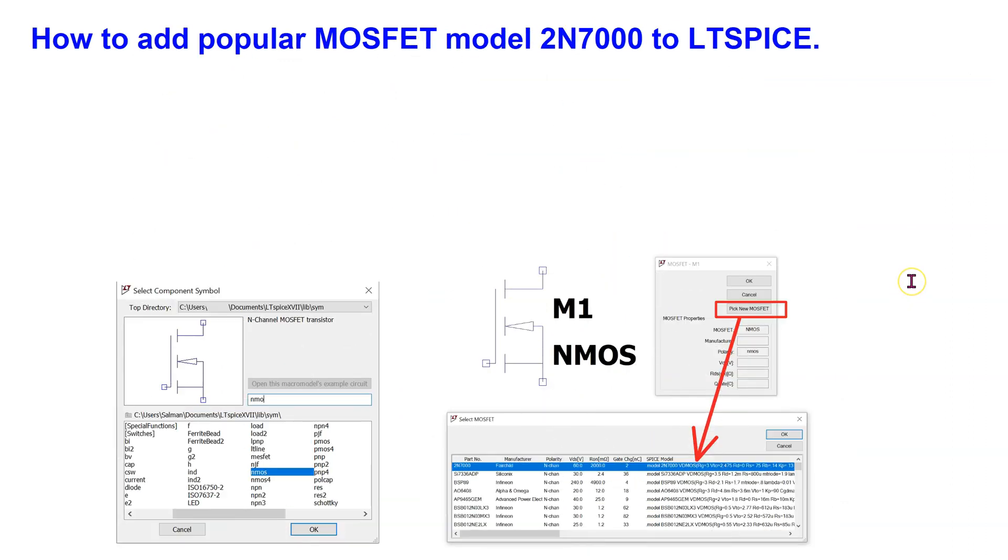LTSPICE also has a large library of MOSFET models. This can be accessed by placing the NMOS symbol onto the schematic and then right-clicking it to bring up this menu shown here. By clicking on pick new MOSFET, we can select a MOSFET model.